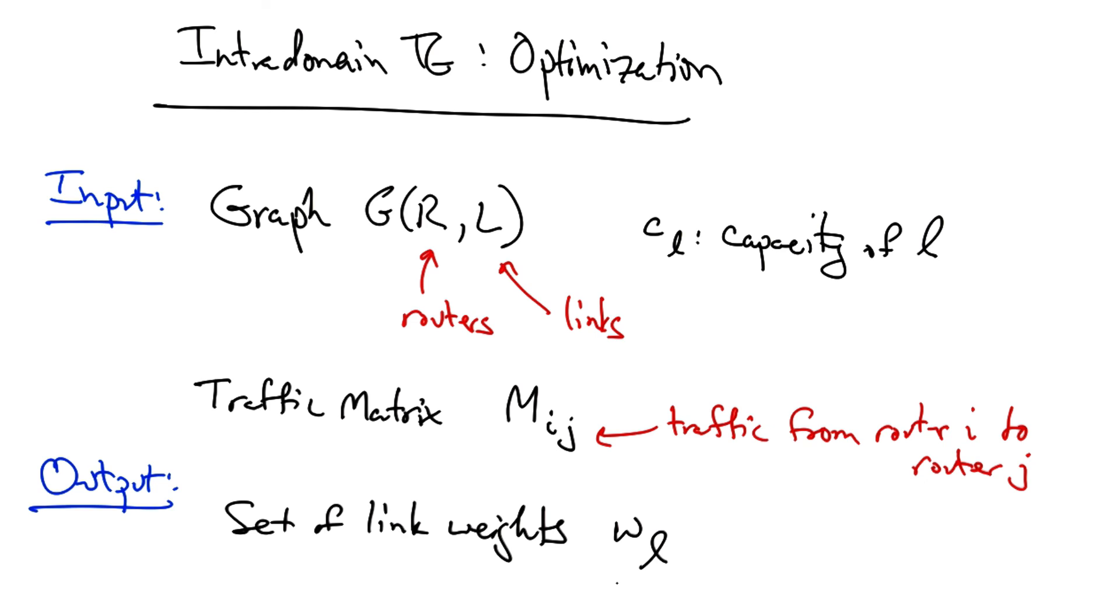We could talk about, for example, minimizing the maximum congested link in the network, evenly splitting traffic loads across links, and so forth.